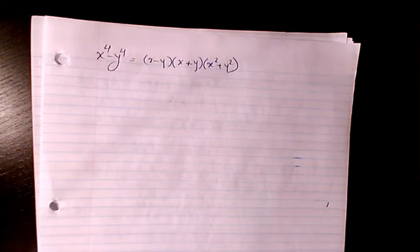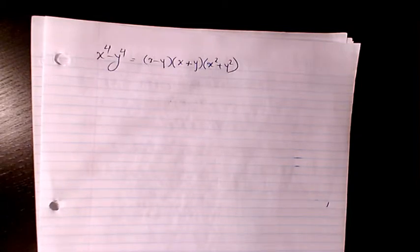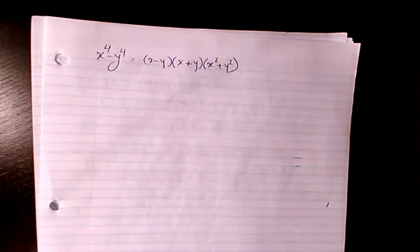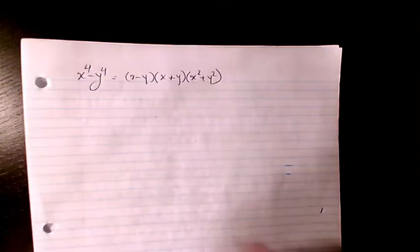In this video I want to prove this equality: x to the power of 4 minus y to the power of 4 equals x minus y times x plus y times x squared plus y squared.